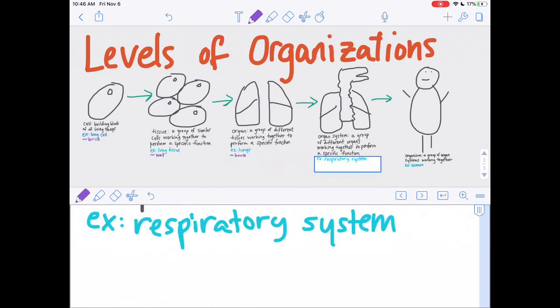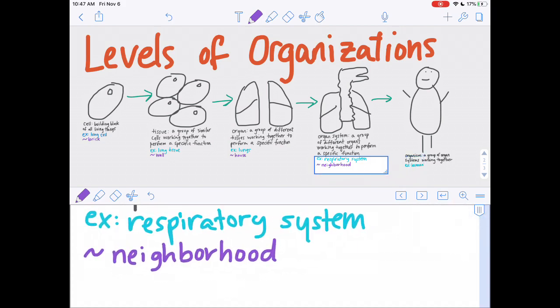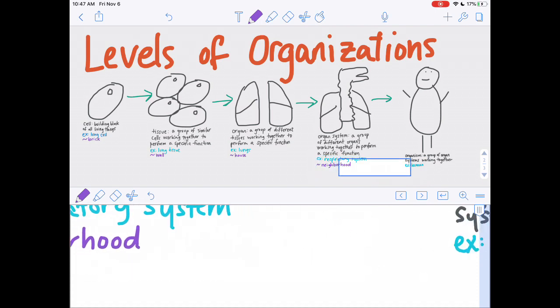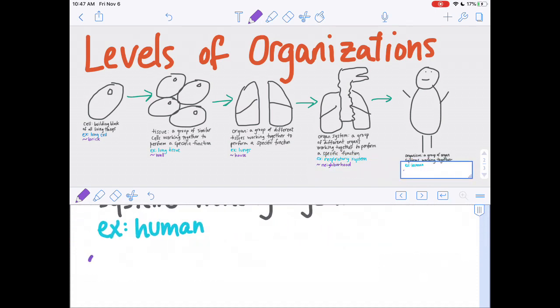Kind of like the west end or cathedral hill or the west side. So a bunch of houses together makes a neighborhood. And a bunch of walls and doors and floors makes a house. And a bunch of bricks can make a wall. And lastly, if you have a lot of neighborhoods together, then you have a city.